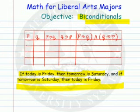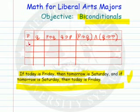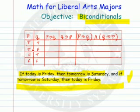Let's look at the truth table for this and see why the whole thing is true. The P's and Q's: true/true, true/false, false/true, false/false. Now, when is a conditional false? When the antecedent is true and the consequent is false. So the results for the first conditional are: true, false, true, true.